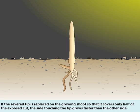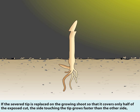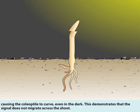If the severed tip is replaced on the growing shoot so that it covers only half of the exposed cut, the side touching the tip grows faster than the other side, causing the coleoptile to curve even in the dark. This demonstrates that the signal does not migrate across the shoot.